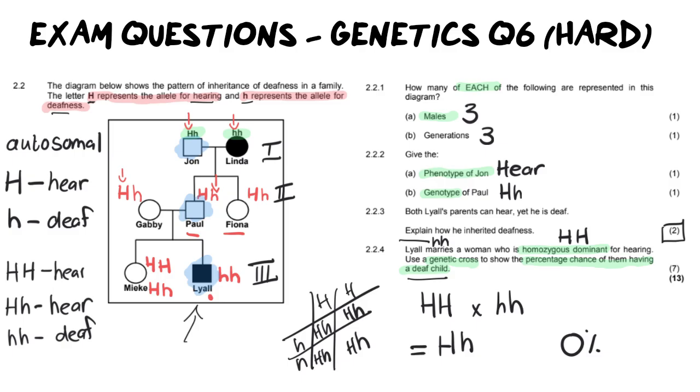Now, of course, this is not how we are going to lay out our genetic cross. Remember, the genetic cross is when you have your P1, your gametes, your fertilization, your F1, and that kind of thing. And I'm going to show you the memo now so you can see and compare.